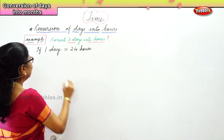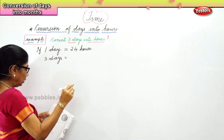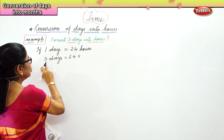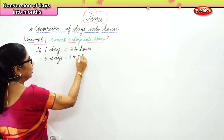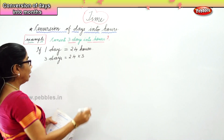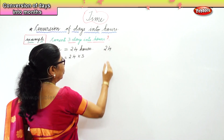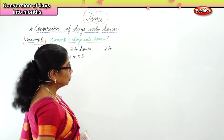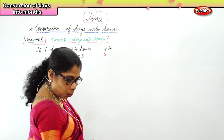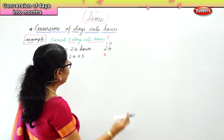Three days is equal to what? 24 hours into three. One day is twenty-four, three days is into three, which gives us the answer. We have twenty-four — two and four — into three. This is tens and ones we must remember. Multiply it by three.